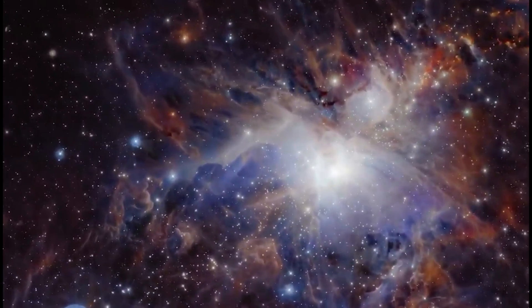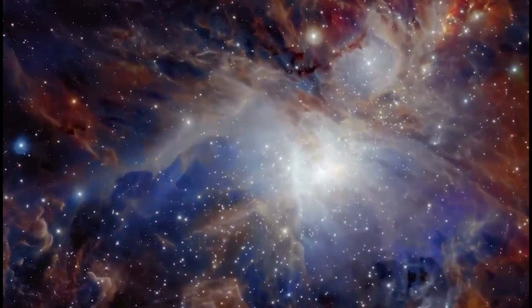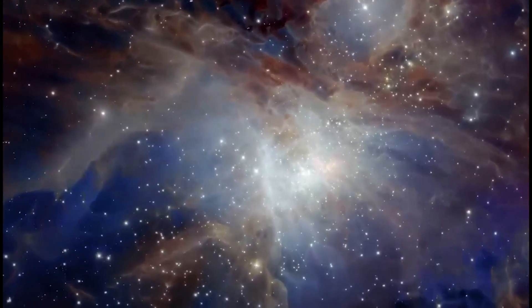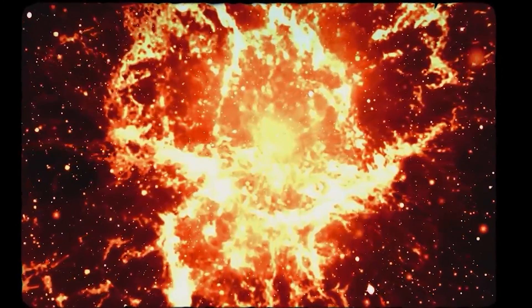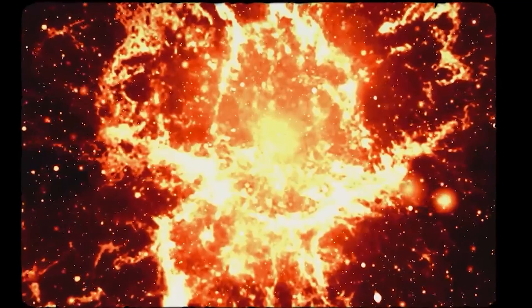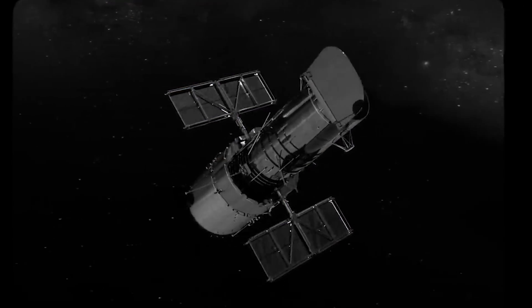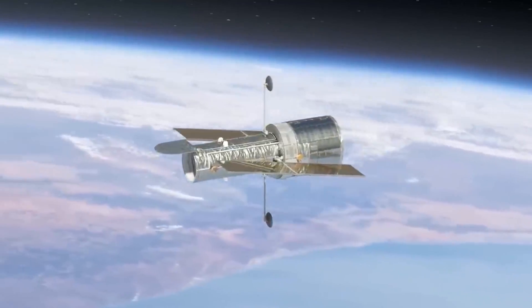Before a star goes supernova, it loses an incredible amount of mass and expels a voluminous cloud of dust. That dust often engulfs the stars and disguises them, so it is impossible for them to be seen by any telescopes on Earth before they explode.